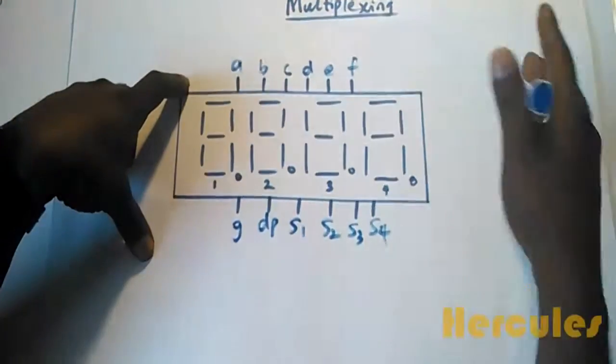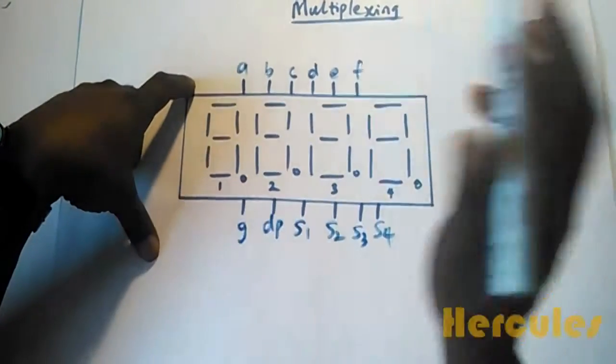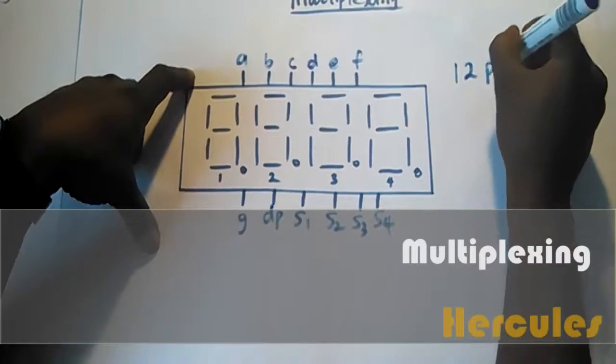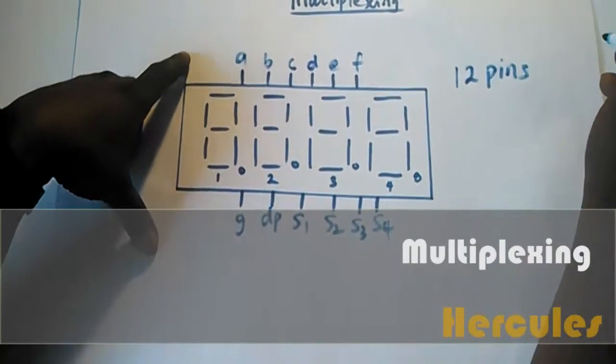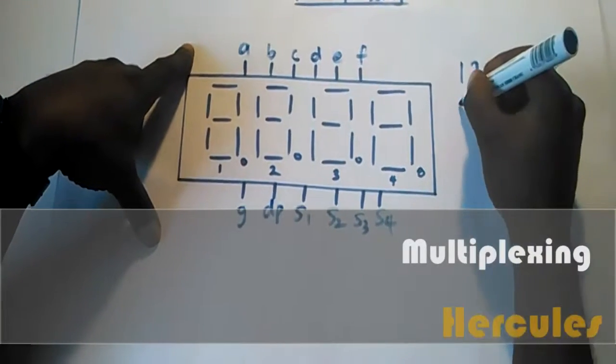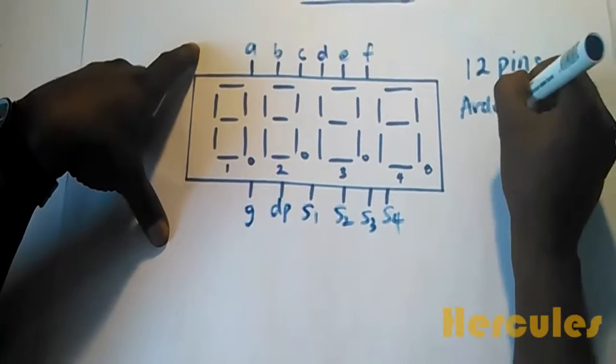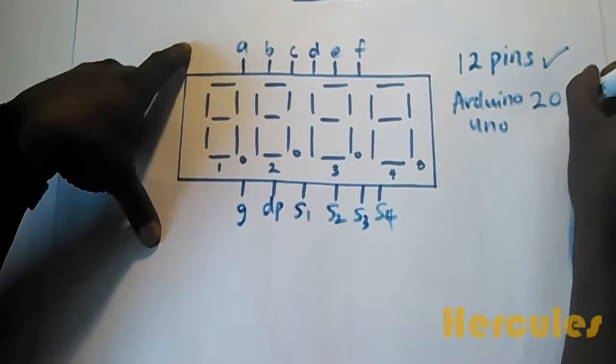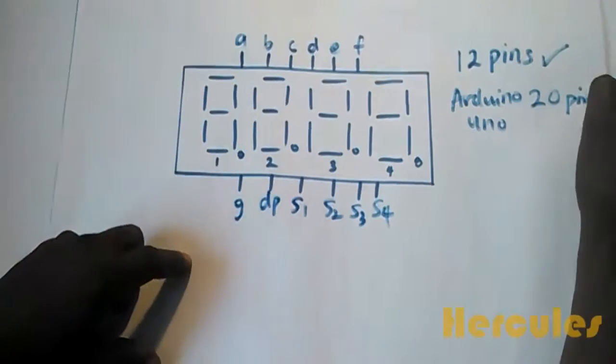For the Arduino Uno that has 20 pins, this works very well. Using 12 pins instead of 36 makes the project feasible with the Arduino Uno.